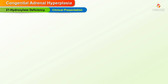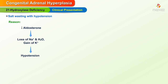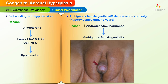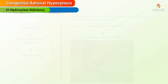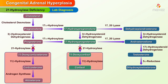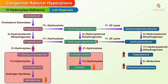Clinically, 21-hydroxylase deficiency presents as salt wasting with hypotension, ambiguous female genitalia, or male precocious puberty. Laboratory findings show decrease in cortisol and aldosterone, increase in 17-ketosteroids, testosterone, and DHT, and increase in the precursor 17-hydroxyprogesterone.